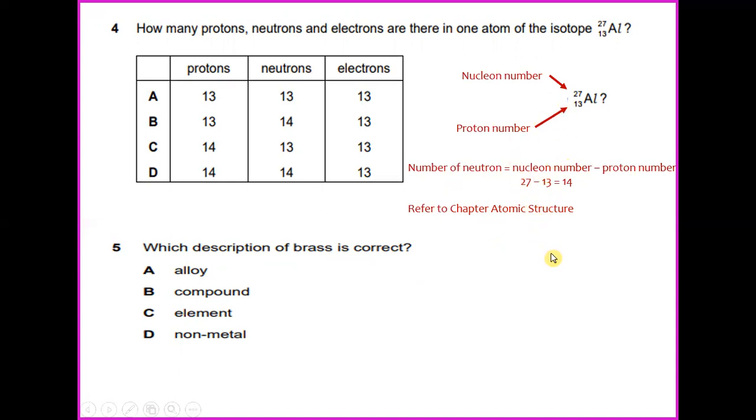So neutron number will be 14. To answer this question, you have to refer to the chapter atomic structure, where you get the answer of proton is equal to 13 and neutron is actually 14, the answer for mass number minus proton number, and the electron will be 13.